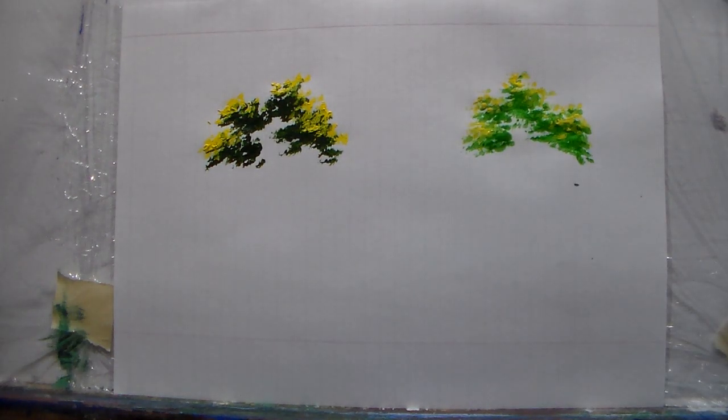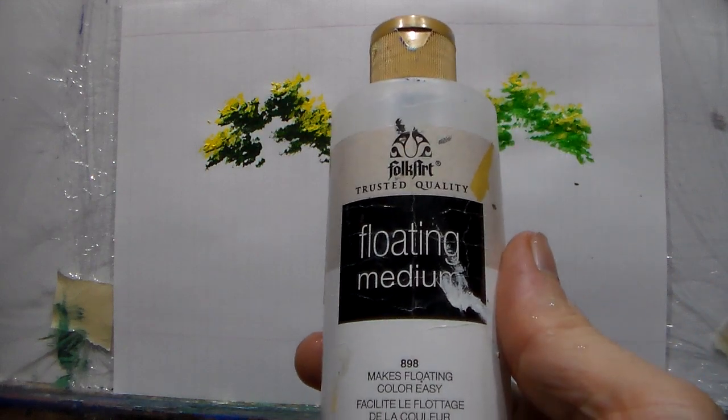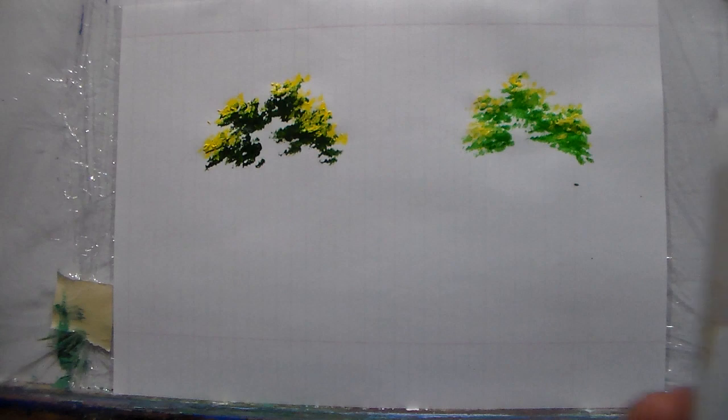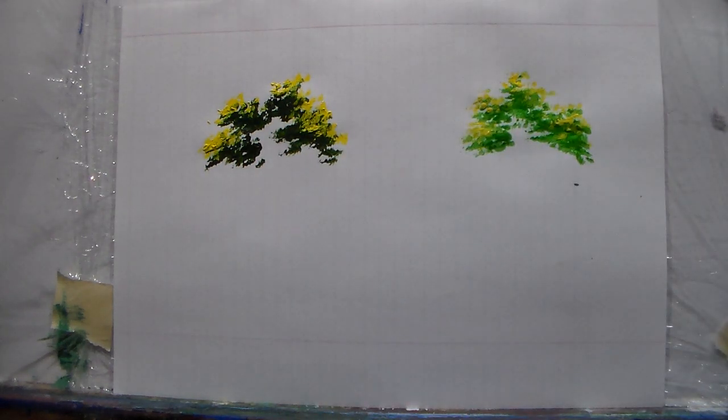Now if you were to add branches, I strongly suggest using this flow medium instead of water. Water runs down the canvas and this doesn't. This is a little more thicker than water.